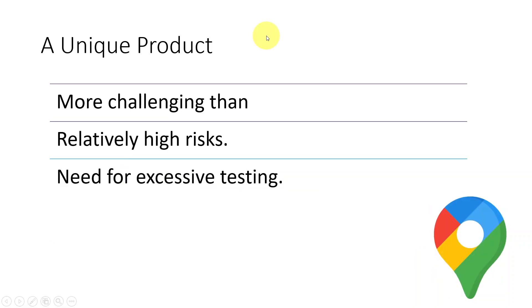The second feature is that we are always developing a unique product. There is no point in developing the same product twice — that is why software development is not manufacturing, because we can easily copy and distribute a general product to any number of customers. So whenever we are involved in developing software, we are developing a new software or a considerably modified version of a previous one. This makes it more challenging with high risk involved, requiring excessive testing, and that is why there is a lot of emphasis on quality assurance in the software industry.